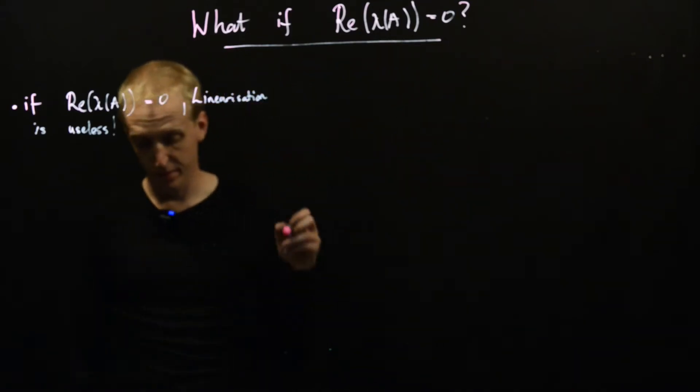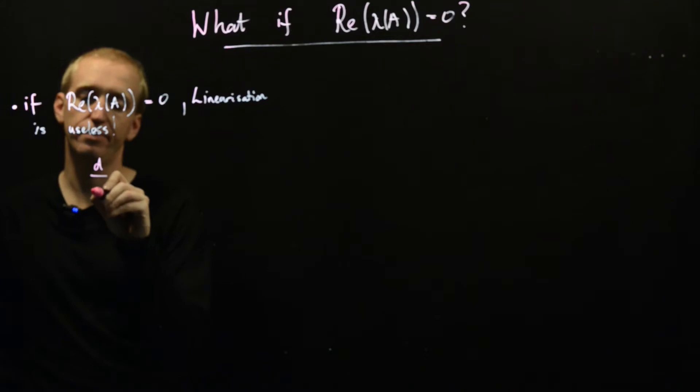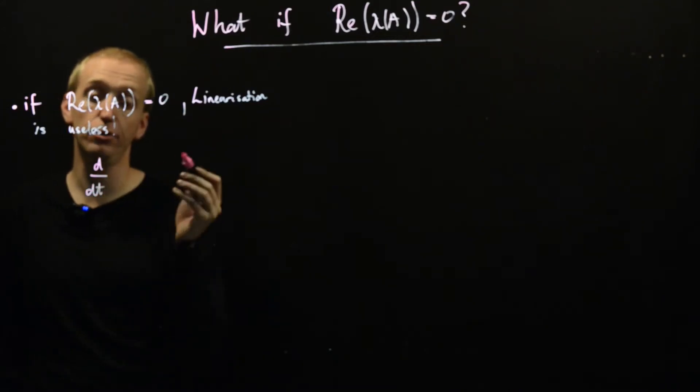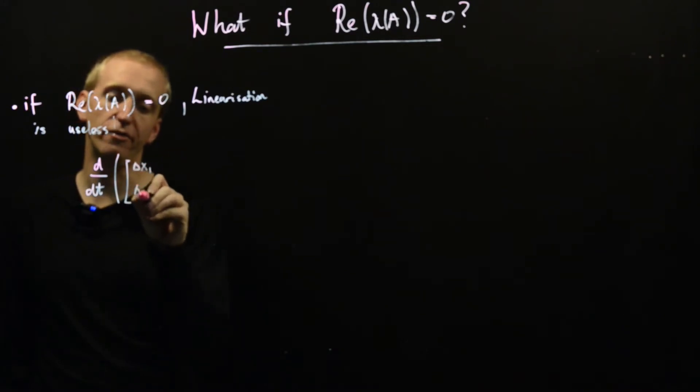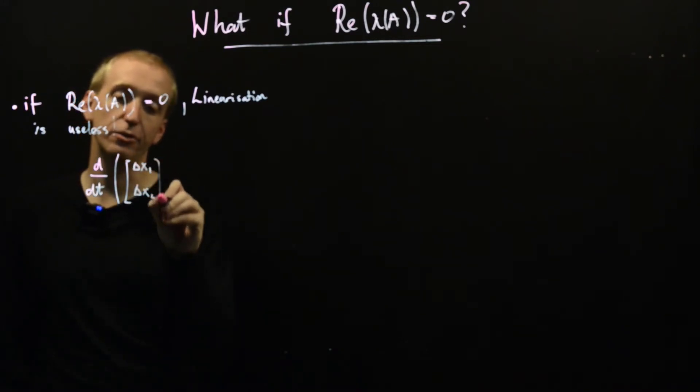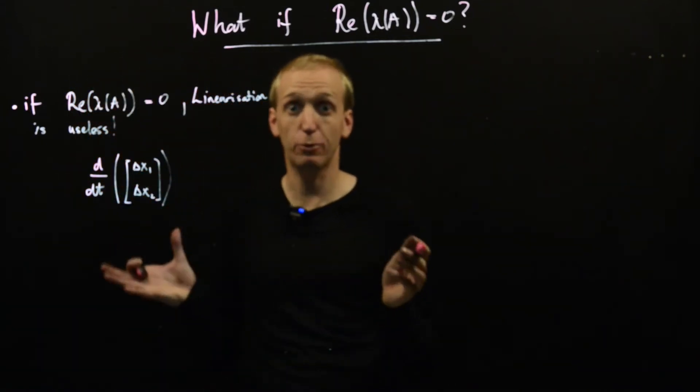So far we've been looking at the behavior of two-dimensional systems about an equilibrium point. And so we had our variable delta x, which was describing our deviation from our linearization, from our equilibrium point.